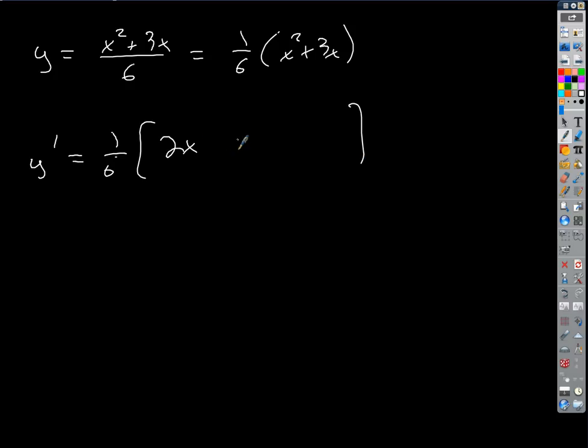So what's the derivative of the first term? Second term? So that's our answer, isn't it? One-sixth. And you could distribute the one-sixth back if you wanted, but that's our answer, right? If we distribute the one-sixth, we just get what? We've got x over 3 plus one-half. Okay. Right? Okay, how about this?